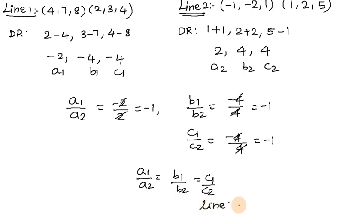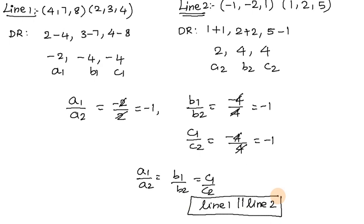Therefore Line 1 and Line 2 are parallel. This is how we prove two lines are parallel using the proportionality of their direction ratios.